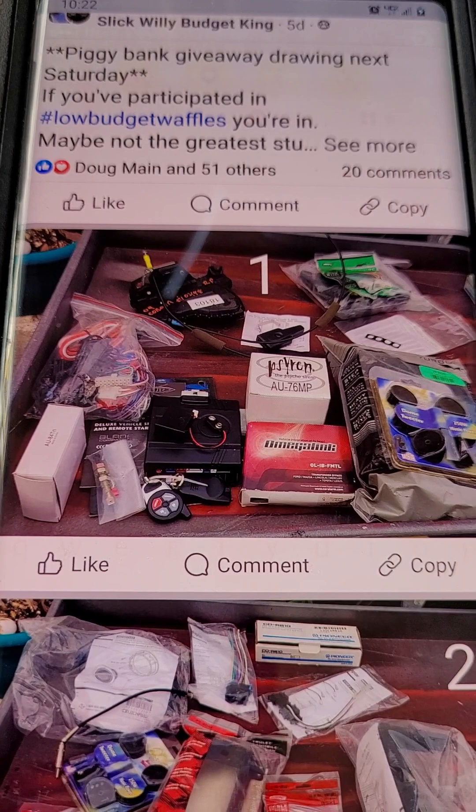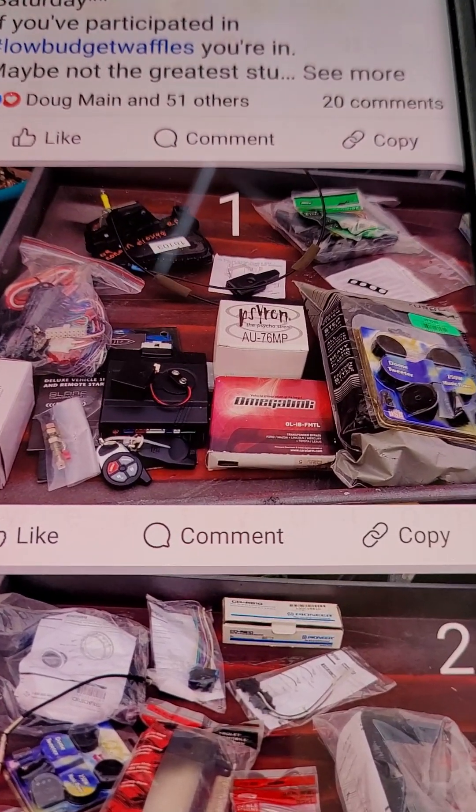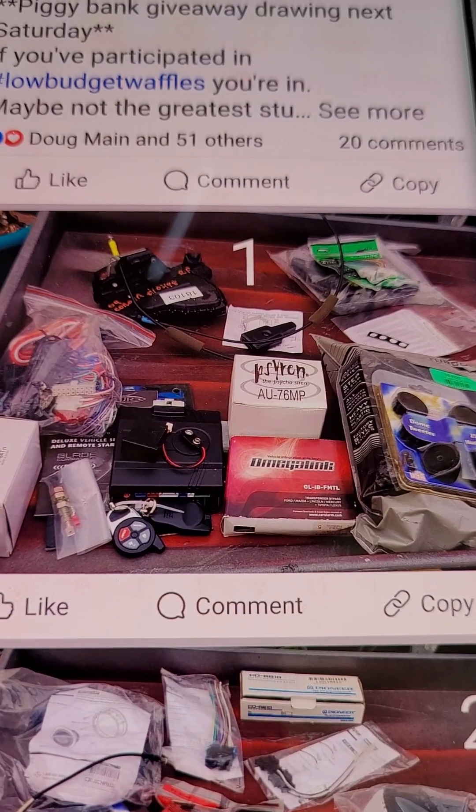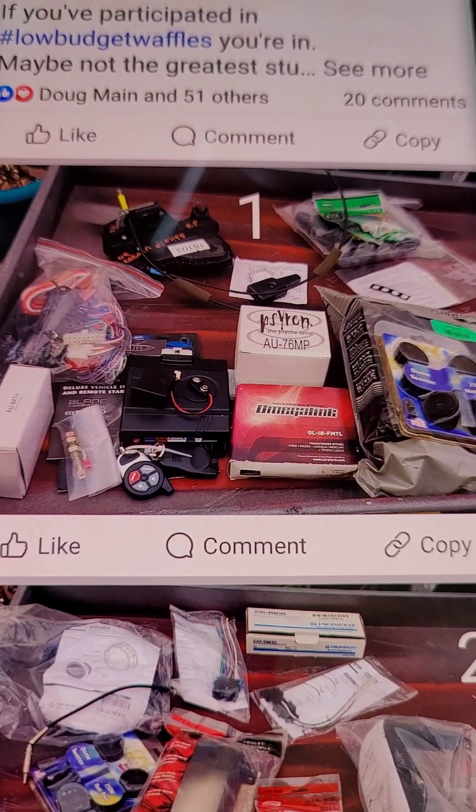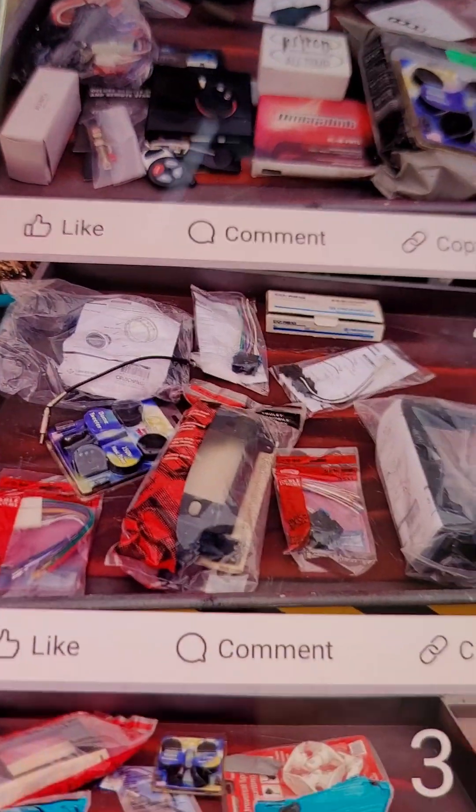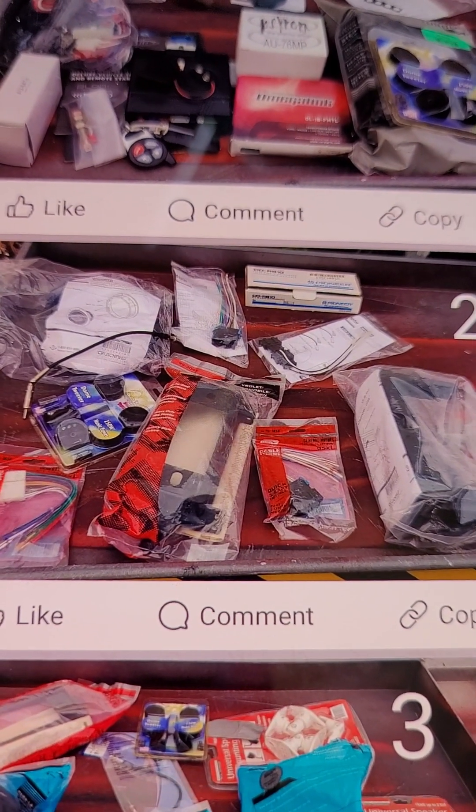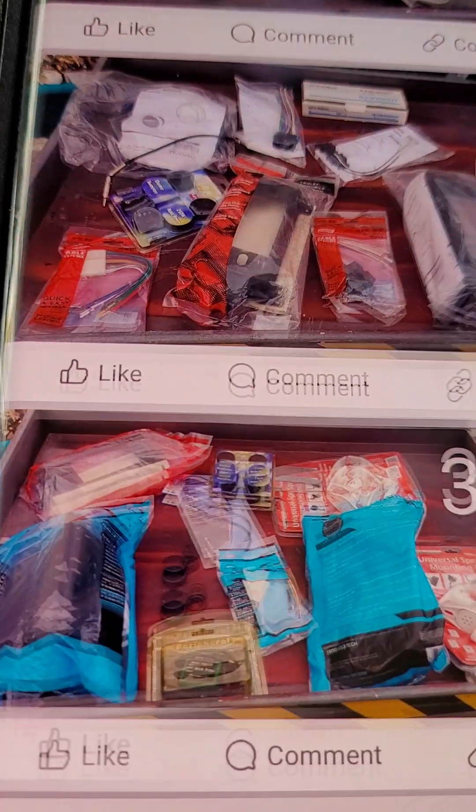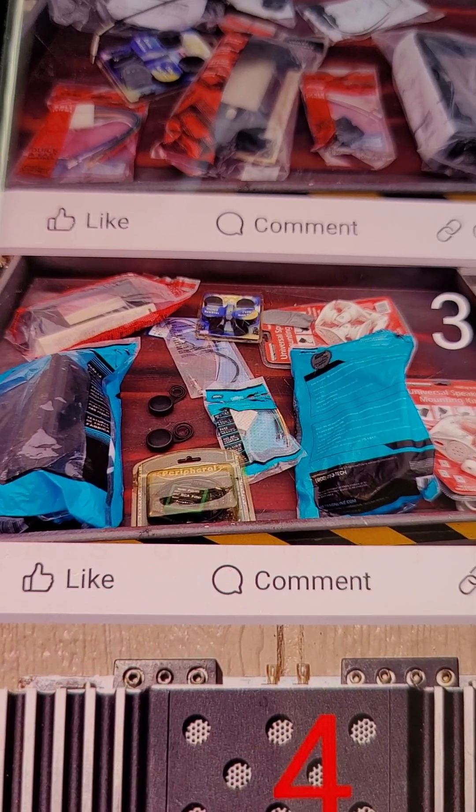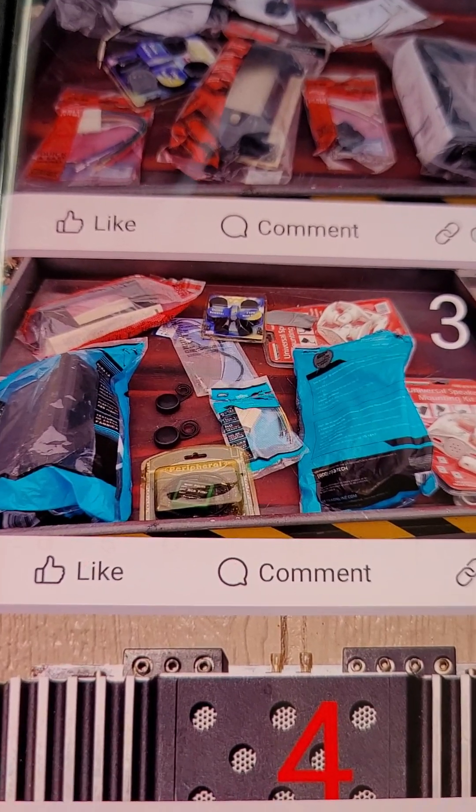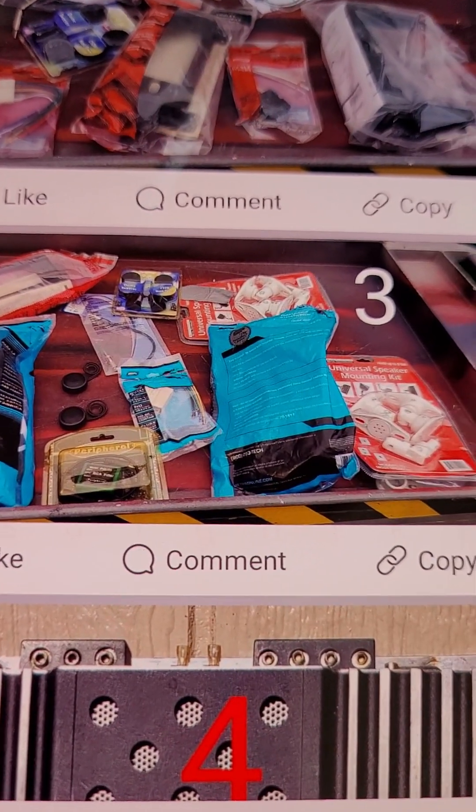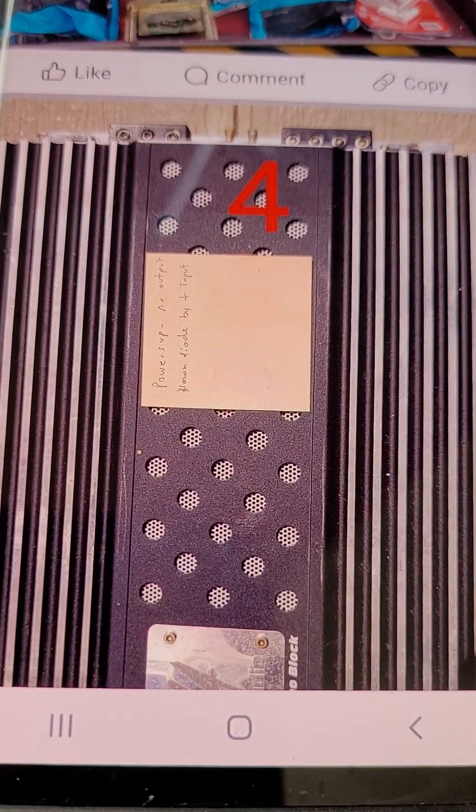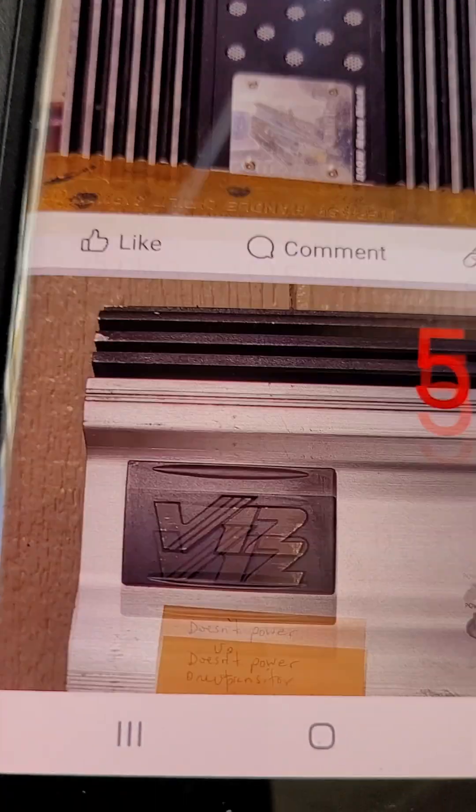Number one is a grab box with miscellaneous stuff, some of it includes Toyota stuff and other little miscellaneous car audio items. Number two I think is GM truck, probably 90s, and other miscellaneous car audio items. Number three has some Saturn stuff and other miscellaneous audio items.